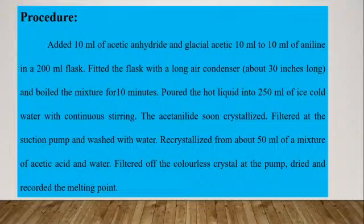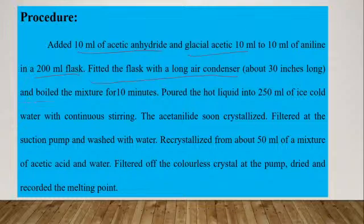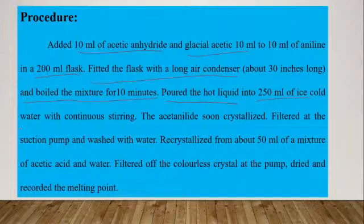The procedure for the synthesis of acetanilide: we will add 10 ml of acetic anhydride and glacial acetic acid into a 200 ml flask. Then, fit the flask with a long air condenser and boil the mixture for 10 minutes. After heating and boiling, we will pour this hot liquid into 250 ml of ice-cold water with continuous stirring. Soon, the acetanilide will crystallize out.